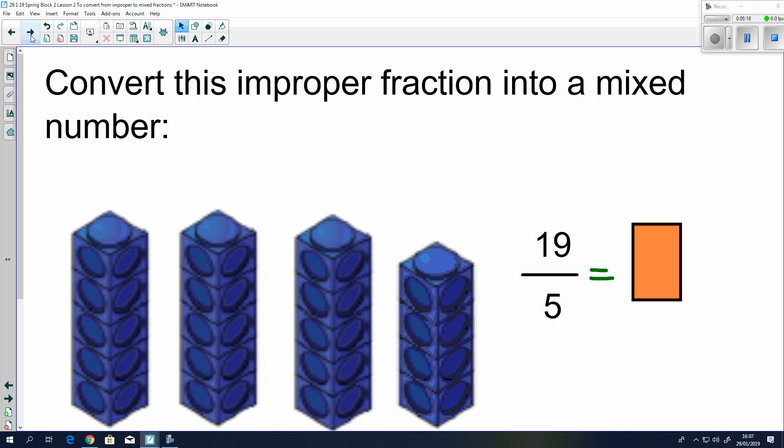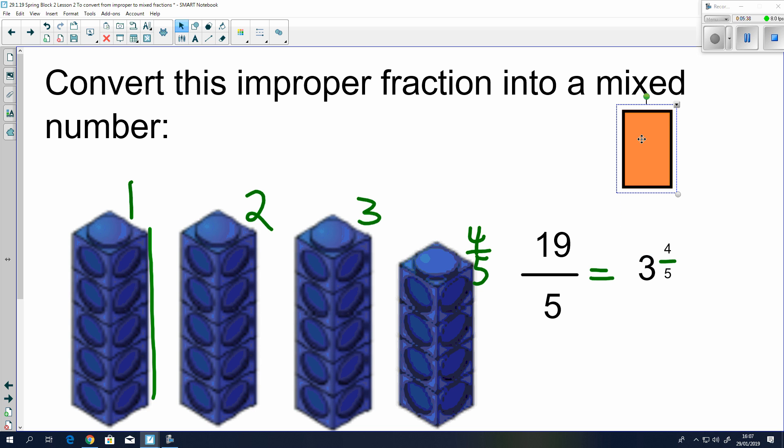Here, we've got an improper fraction that we'd like to convert into a mixed number. So, if we think about, we've got 5, and we're stopping at 5, each section is worth 5. So, if we have this, in terms of this being a bar worth 5, we have one full one here, another full one here, another one here, and then we have 4 left over, 4 out of a possible 5. So, if we wanted to convert that into that mixed number, there you go, 1, 2, 3, and 4 fifths.